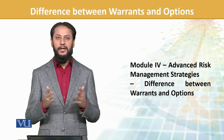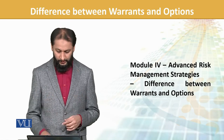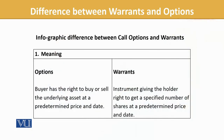So we need to know the factor that differentiates the two. Meaning-wise, in options, the buyer has the right to buy or sell an underlying asset at a pre-determined price and date. Whereas in warrants, the instrument gives the holder the right to get a specified number of shares at a pre-determined price and date.